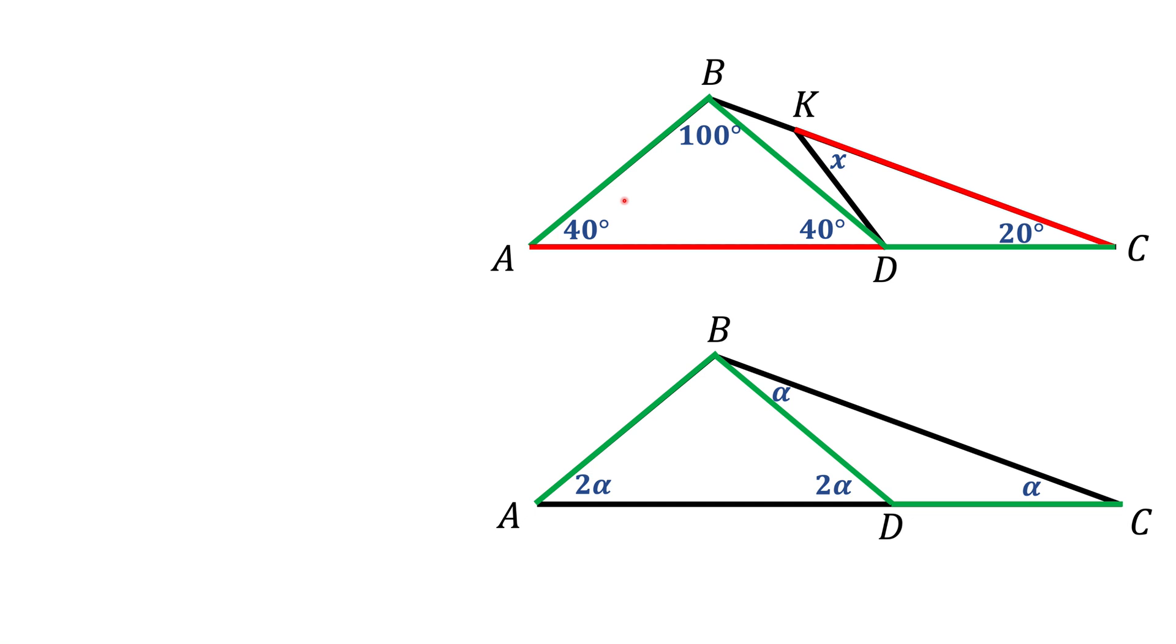Normally we are looking in problems like this for isosceles triangles and equilateral triangles to find this angle X. Now we found a lot of green lengths, so we can find isosceles triangles with those green lengths. But somehow we have a problem relating this red length AD and this red length CK. We need to relate them.